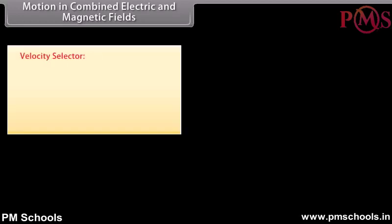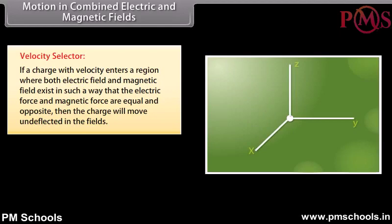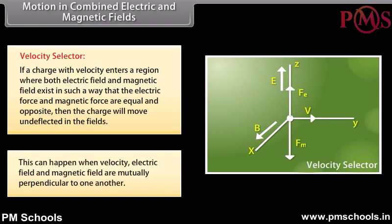Motion in combined electric and magnetic fields — velocity selector: If a charge with velocity enters a region where both electric and magnetic fields exist such that the electric force and magnetic force are equal and opposite, the charge moves undeflected. This occurs when velocity, electric field, and magnetic field are mutually perpendicular to one another.